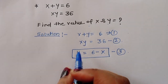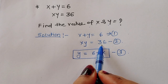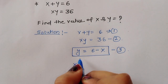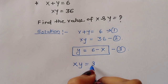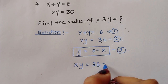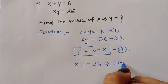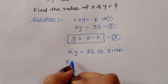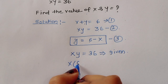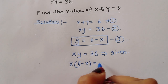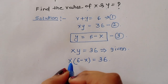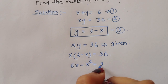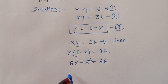From equation 3, y is equal to 6 minus x. Now xy is equal to 36, so we substitute: x times (6 minus x) is equal to 36. Expanding: 6x minus x squared is equal to 36.